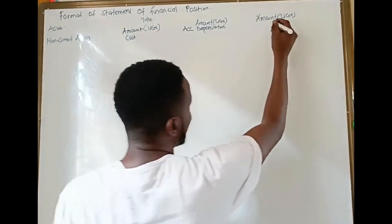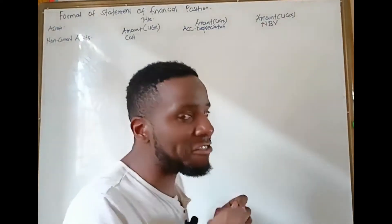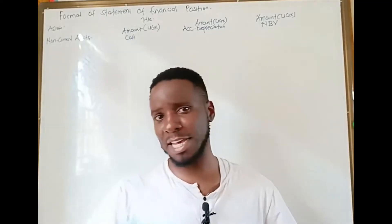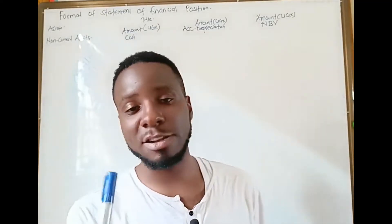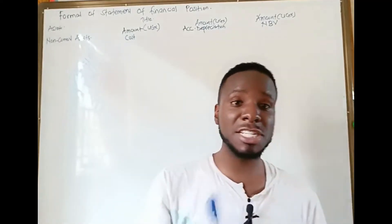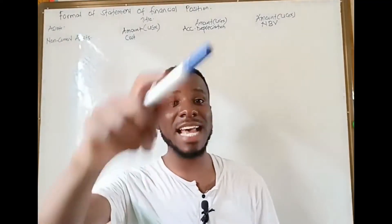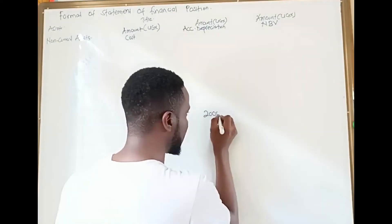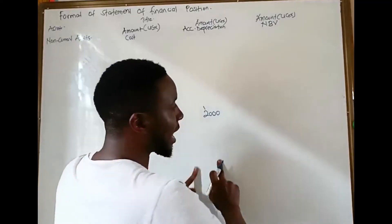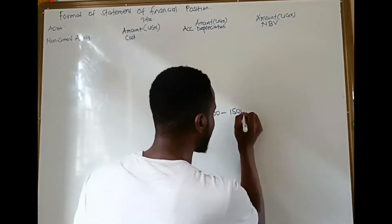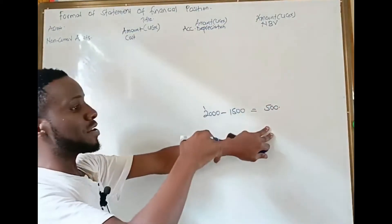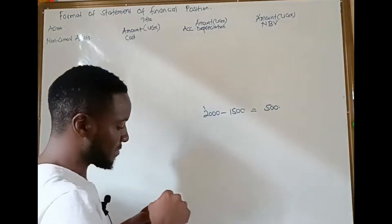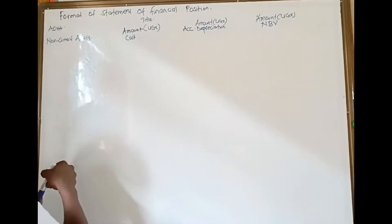After accumulated depreciation we find the net book value, which is the fair value — the actual amount of the item at that moment. For example, if this marker was bought at 2,000 shillings, after one year I would not sell it for 2,000 shillings — maybe 500 shillings. That means it has depreciated by 1,500. The 2,000 is the cost, the 1,500 is the accumulated depreciation, and the 500 is the net book value.